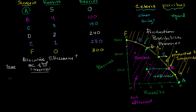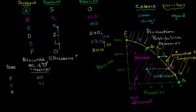Let's start with scenario F. Sitting in scenario F, if we want to get one extra rabbit, we are going to have to give up 20 berries. In scenario E, if we're sitting in scenario E and we want even one more rabbit, we now have to give up 40 berries. So the marginal cost of one more rabbit is 40 berries. Now let's go to scenario D. The cost of one extra rabbit is now 60 berries.